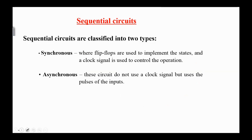Sequential circuits are classified into two types: synchronous and asynchronous. In synchronous sequential circuits, flip-flops are used to implement the states and the clock signal is used to control the operation. Asynchronous sequential circuits do not use a clock signal but use the pulses of the inputs.